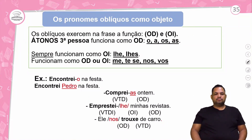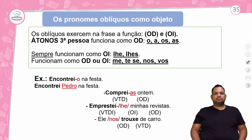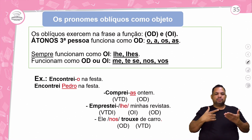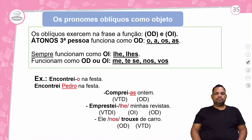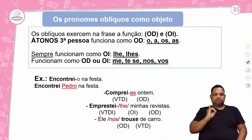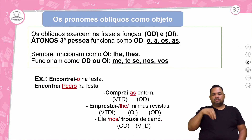Os pronomes oblíquos como objeto. Os pronomes oblíquos átonos vão funcionar como: objeto direto — o, a, os, as; os que vão funcionar como objeto indireto são o lhe e o lhes; e vão funcionar como objeto direto e indireto: me, te, se, lhe, nos, vos, lhes.